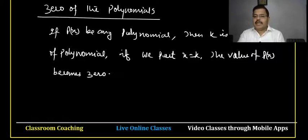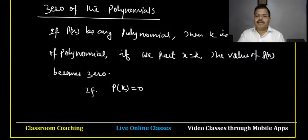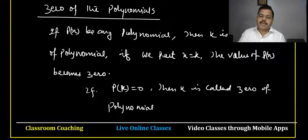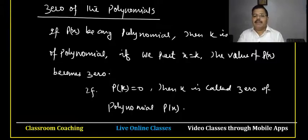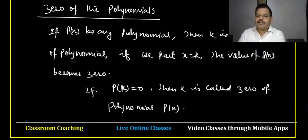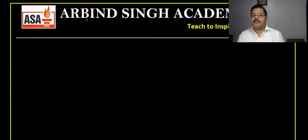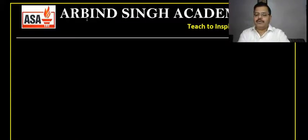So if p(k) = 0, then k is called the zero of polynomial p(x). The number of zeros depends upon the degree of the polynomial. Zero of the polynomial is the value of x for which the polynomial becomes zero — if you put x equal to that value, it becomes zero.